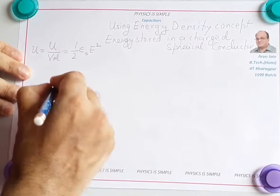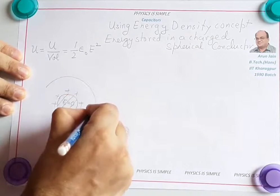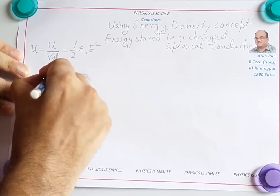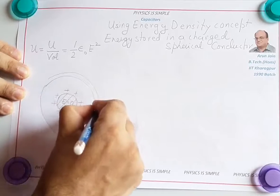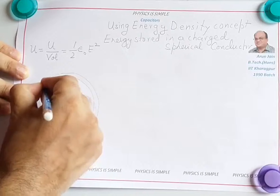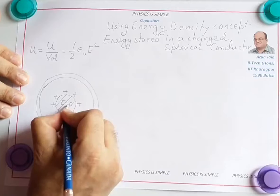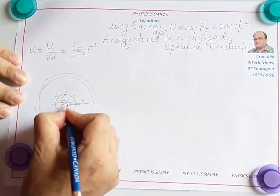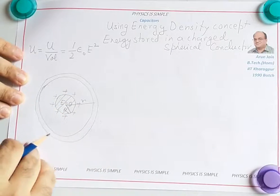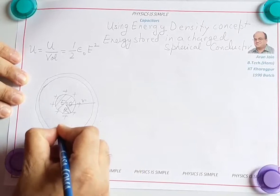Let us consider a differential element because the electric field is variable here. The differential element is a spherical shell of radius r and thickness dr. There is no material here — this is just a region where the electric field exists. This radius r is greater than the radius of the spherical conductor, so it is an external point.